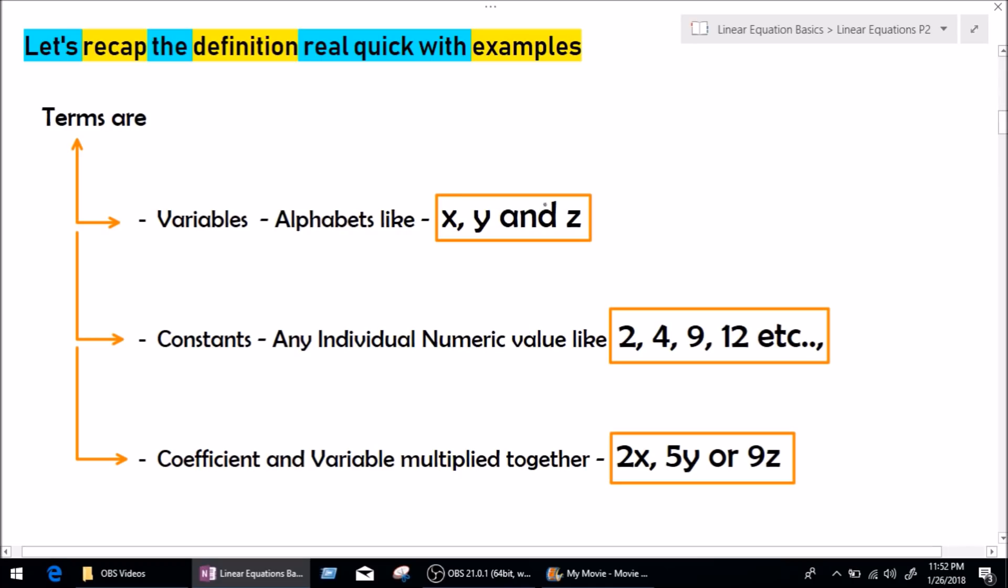So, let me ask you a question. How many terms do you see here? x is one term, y is second term, z is third term. So, we see here, total of three terms.